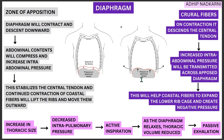To summarize the mechanism: the zone of apposition pulls the diaphragm down and builds intra-abdominal pressure; the crural fibers also pull it down, building pressure even higher and stabilizing the central tendon. The intra-abdominal pressure is transmitted throughout the diaphragm. With the central tendon stabilized, costal fibers continue contracting, moving ribs outward, decreasing intra-pulmonary pressure, causing air to flow in — active inspiration. Diaphragm relaxation then produces passive exhalation.